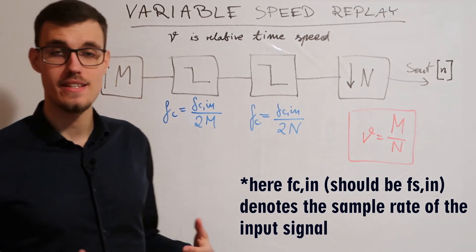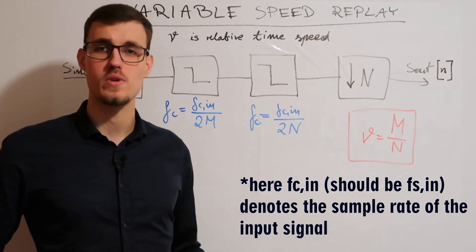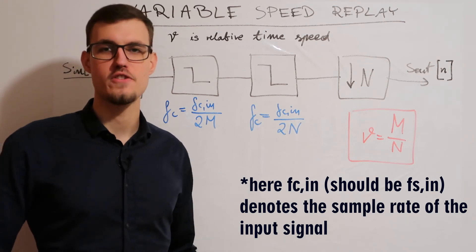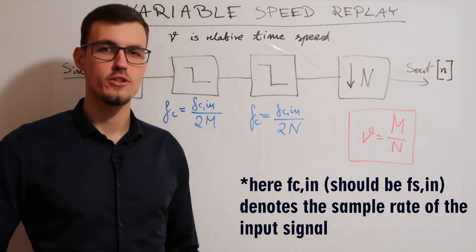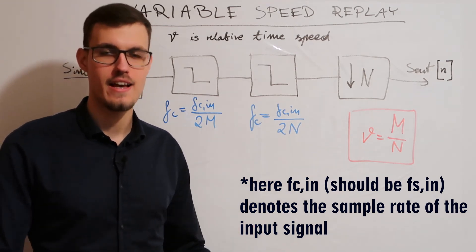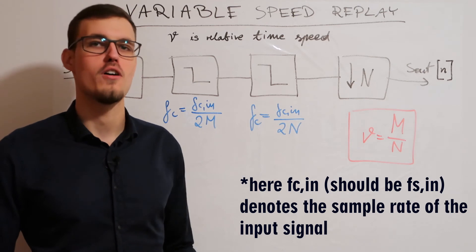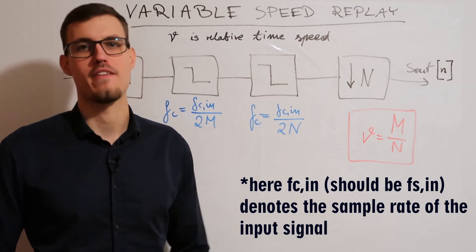We then low-pass filter the signal again. This time with the cutoff frequency equal to Fs in over 2N. We do this in order to prevent aliasing after the process of downsampling by a factor of N.